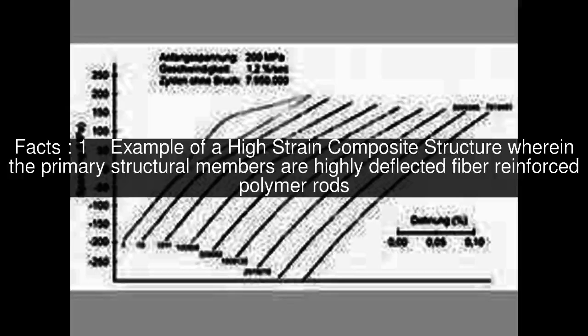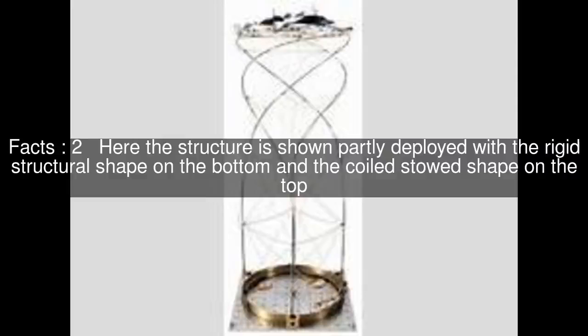Example of a high-strain composite structure wherein the primary structural members are highly deflected fiber-reinforced polymer rods. Here the structure is shown partly deployed with the rigid structural shape on the bottom and the coiled stowed shape on the top.